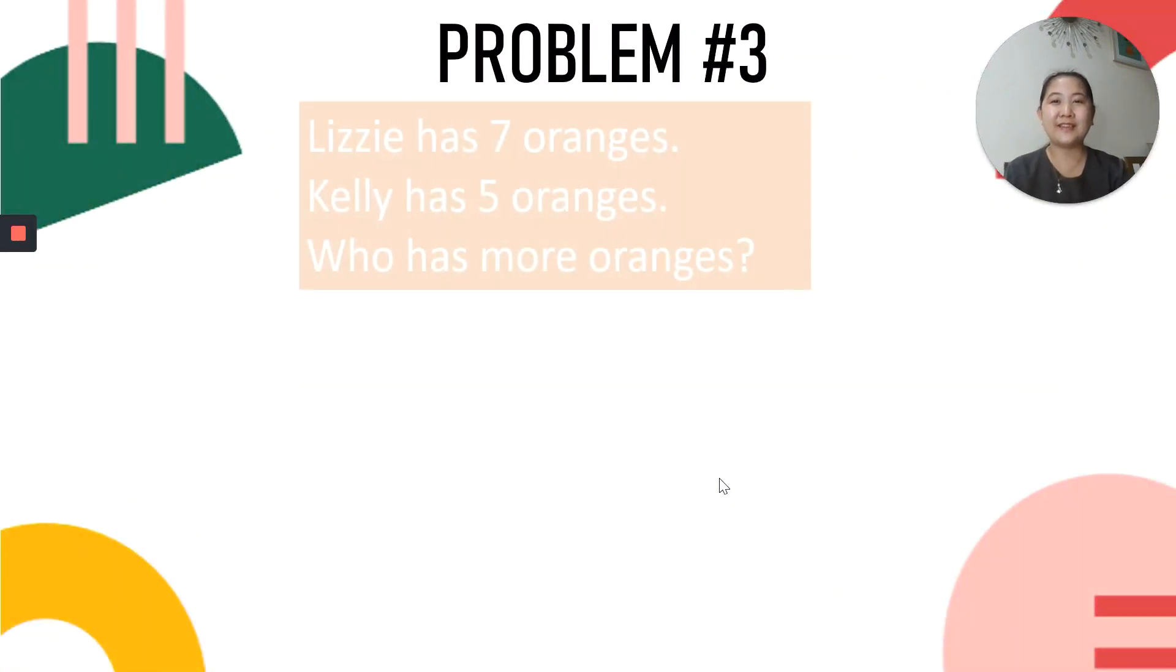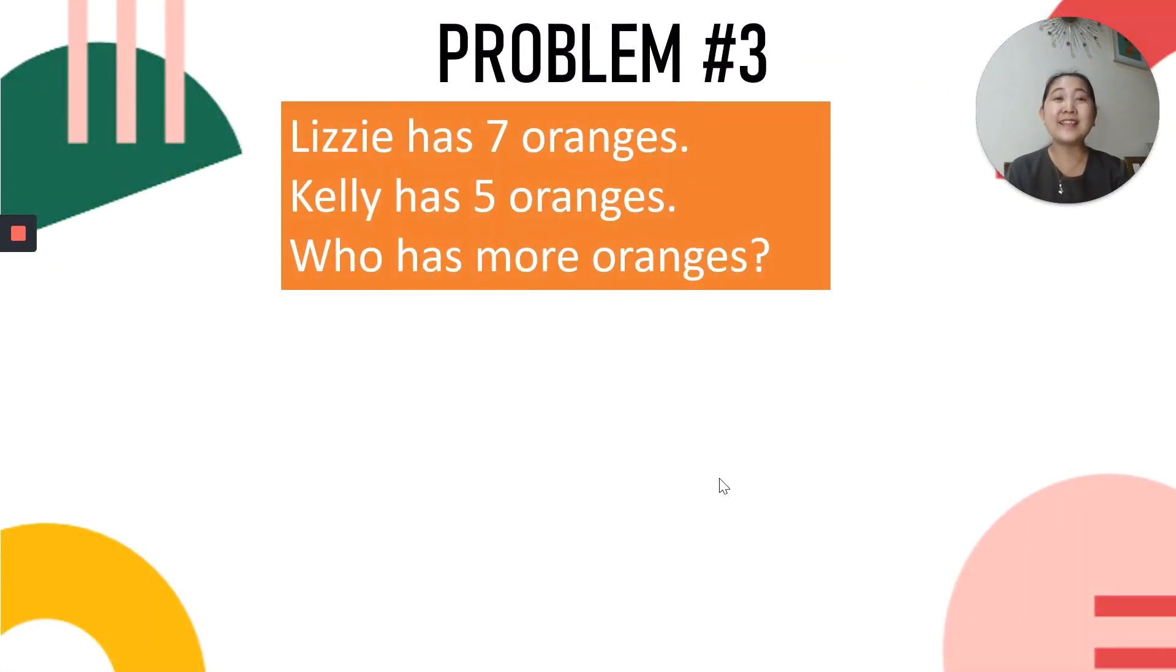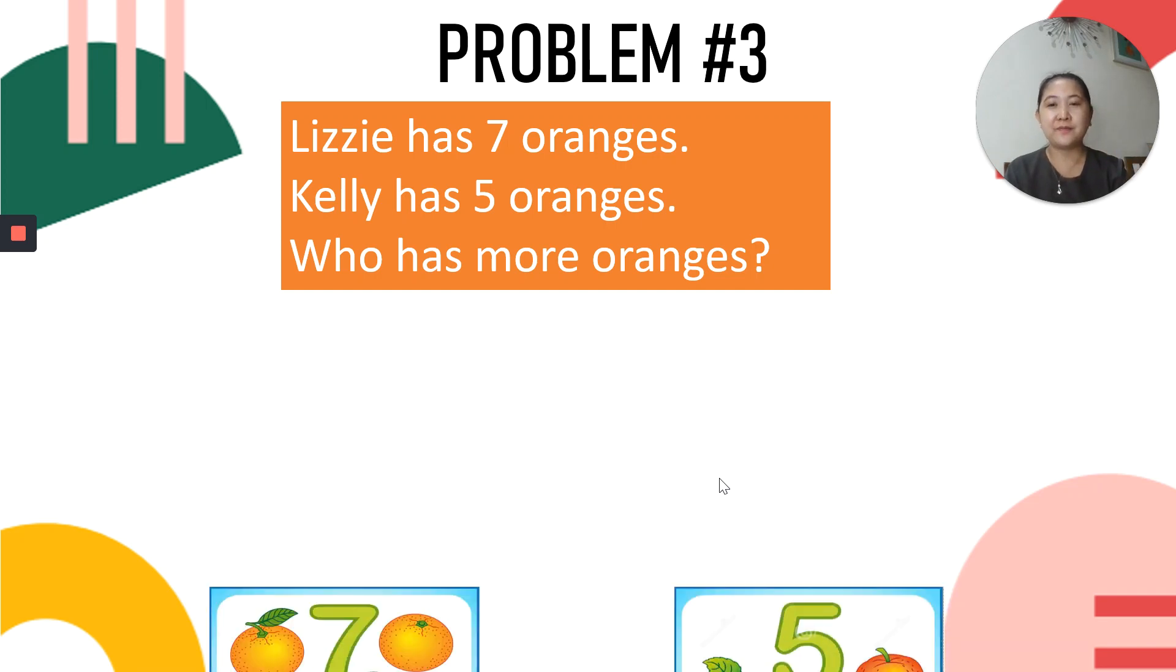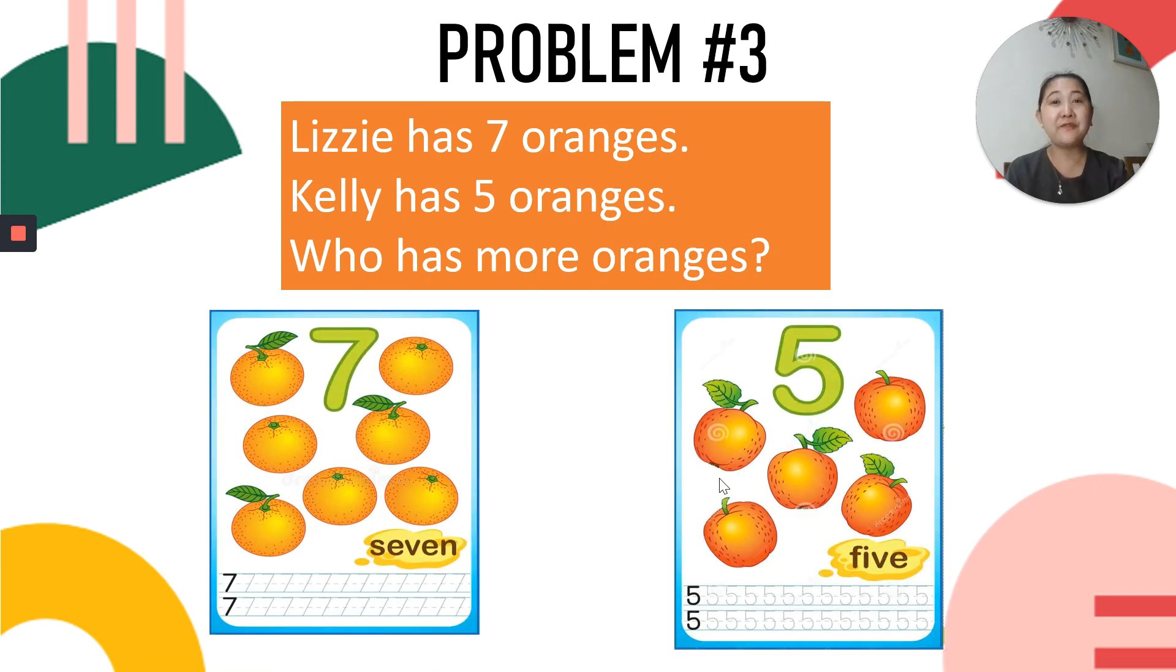Now, let's do problem number 3. Lizzie has 7 oranges. Kelly has 5 oranges. Who has more oranges? Think, think, think. Alright, so let's see. 7 and 5. That's Lizzie, 7 oranges, and Kelly. Look at the number of oranges. Yay! Lizzie has more oranges. Good job! I know you got it right.